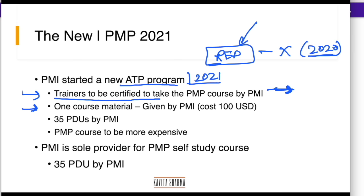Previously, all REPs used to make their own course materials, so different trainers had different slides representing the same PMBOK material in their own way. Now that has changed. PMI gives one course material to all the trainers, and this course material has to be delivered to students by all trainers. So there is only one course material — if you take a training from me or from somewhere else, expect that the course material or the PPTs would be similar.